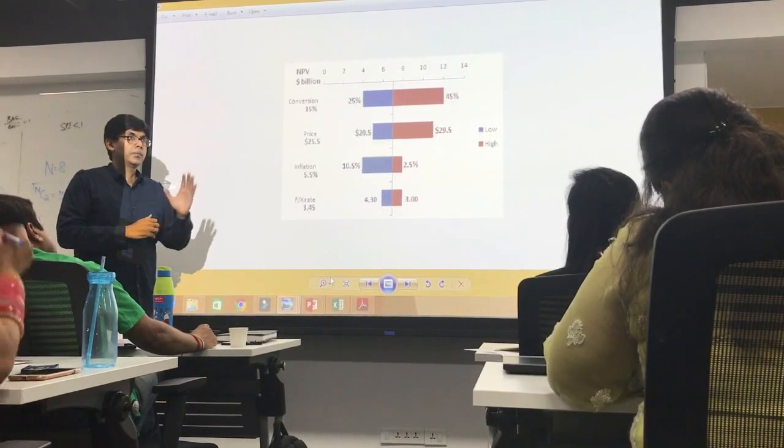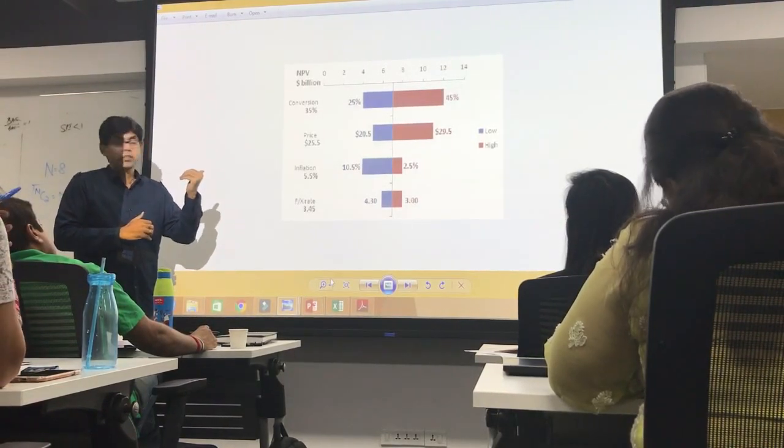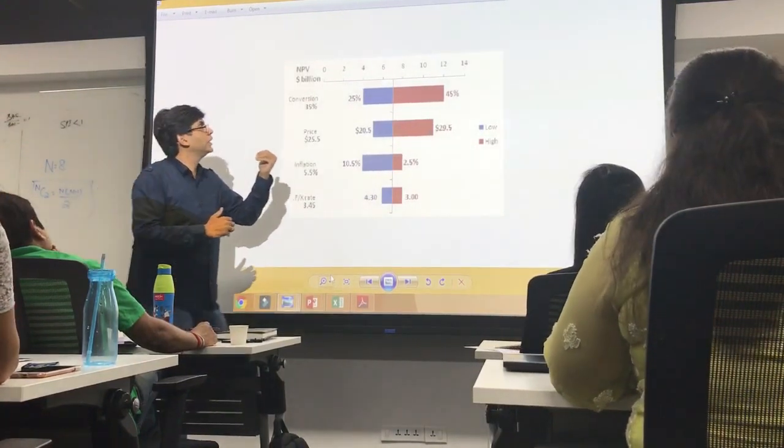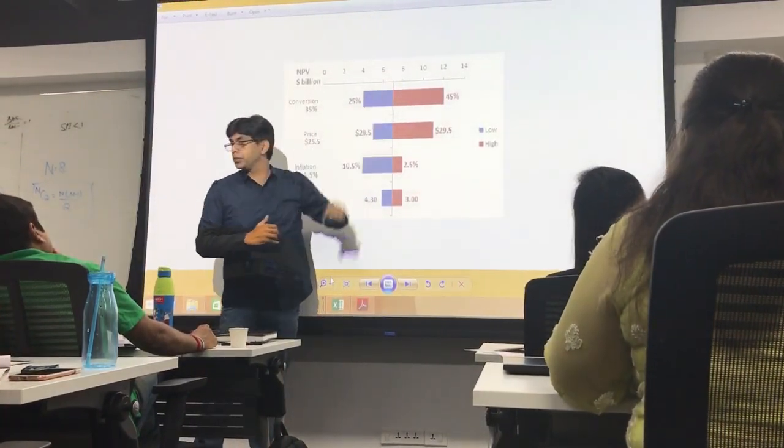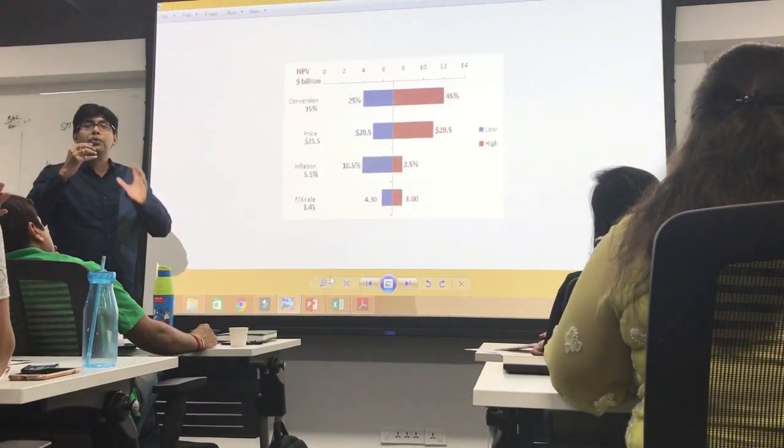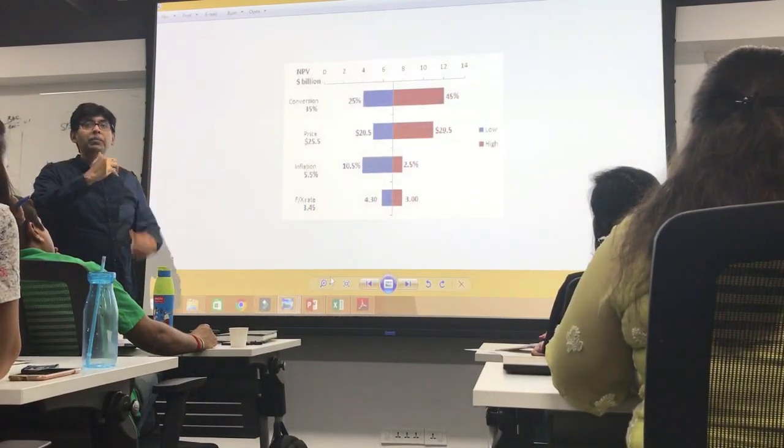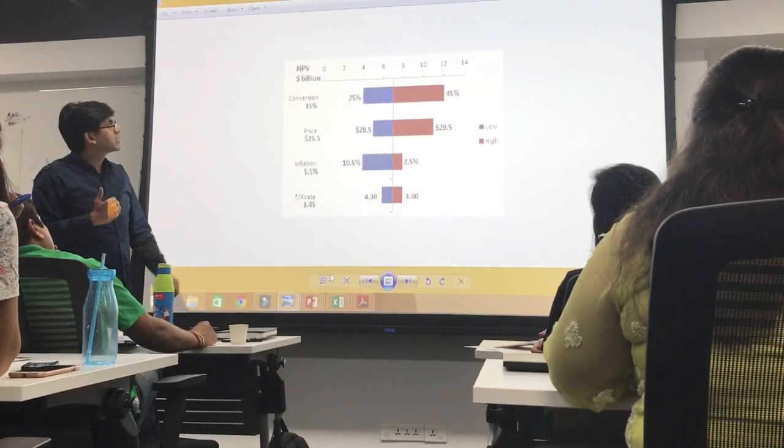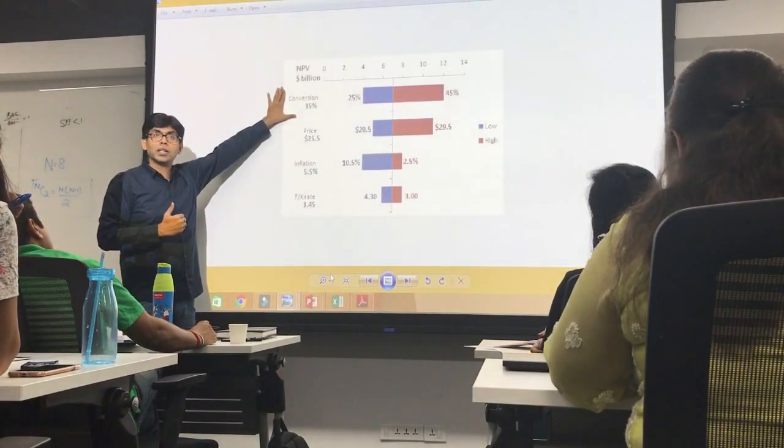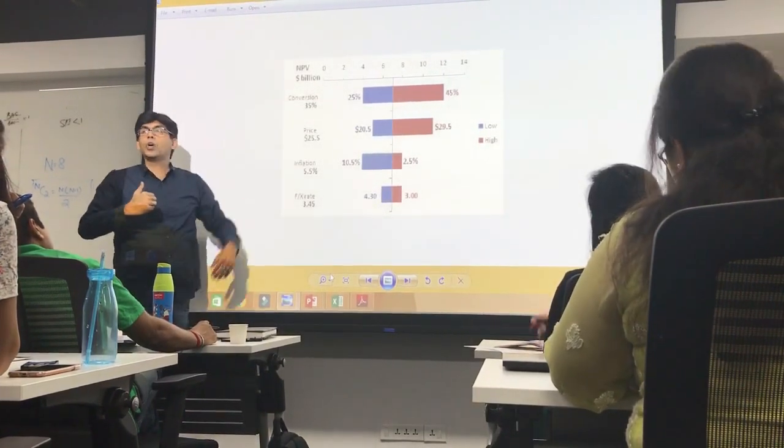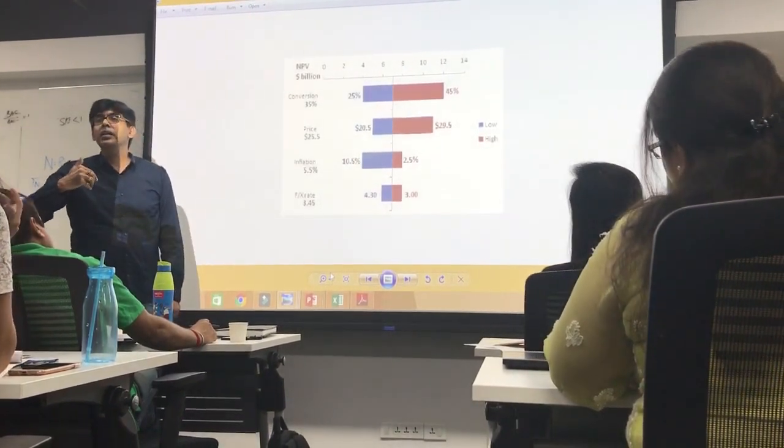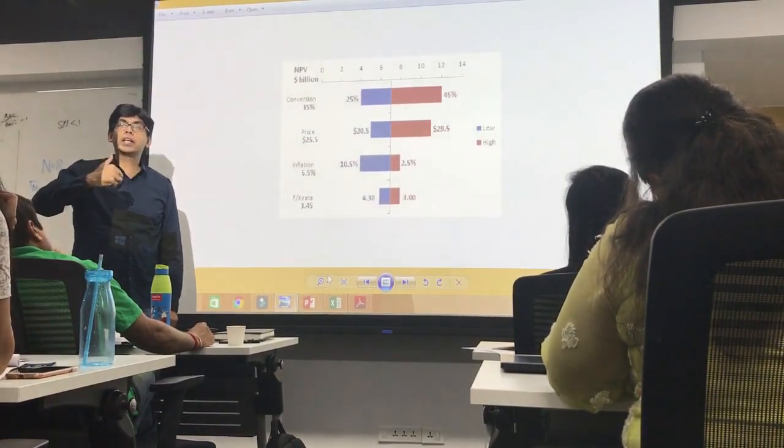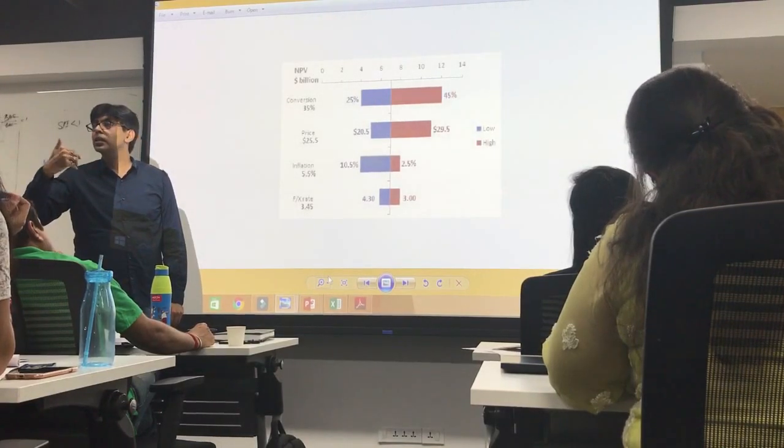Right now we are taking a project objective which is to make a profit of 7 million USD. This 7 million USD profit or important objective can be impacted by multiple risks. One risk is conversion. Conversion means how many leads can be converted into account, how many leads can turn into successful customers.